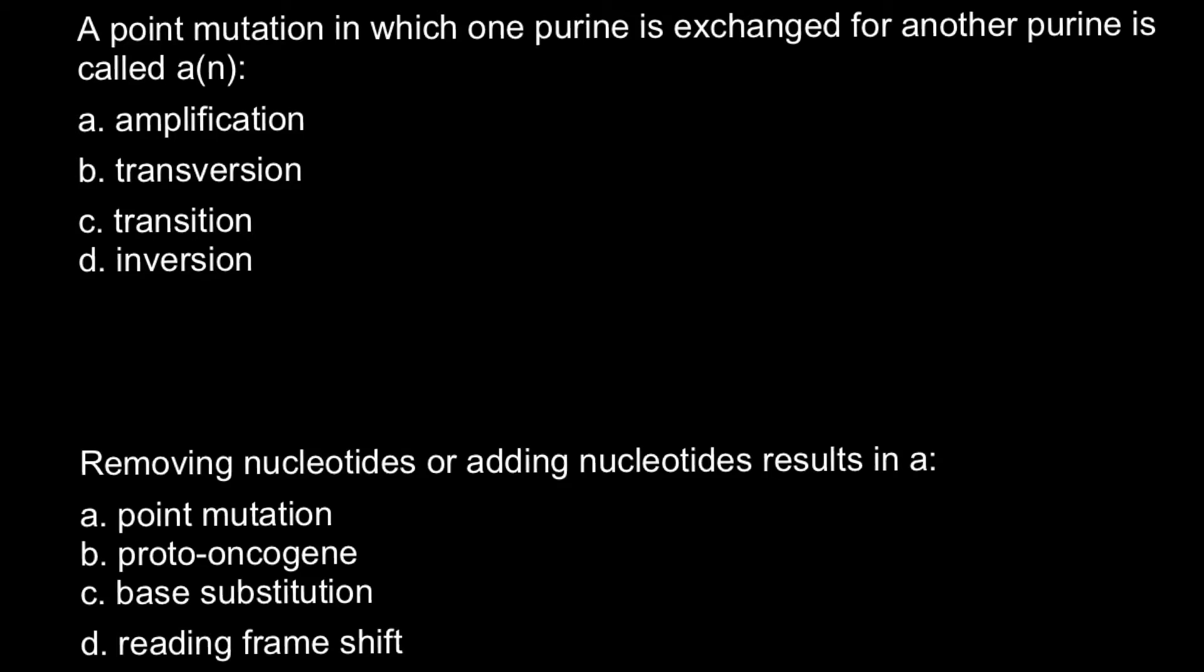So here is the first question: a point mutation in which one purine is exchanged for another purine is called, and here are four answers to choose from. Here is my explanation.